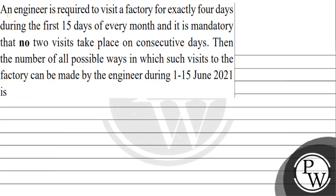The question is: an engineer is required to visit a factory for exactly 4 days during the first 15 days of every month. It is mandatory that no two visits take place on consecutive days. Find the number of all possible ways in which such visits to the factory can be made by the engineer during 1–15 June 2021.